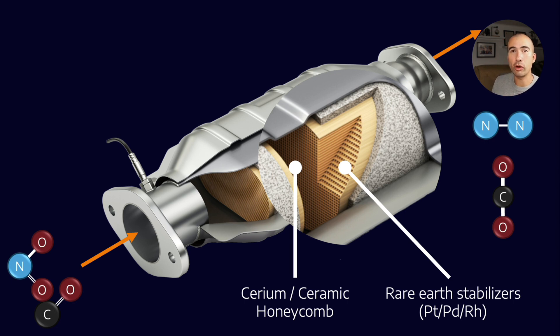Now, platinum and palladium and rhodium are used in many different chemical reactions. They're often used as a catalyst, for example, in chemistry labs. So, it's no surprise to see them here in a catalyst which is designed for gases.